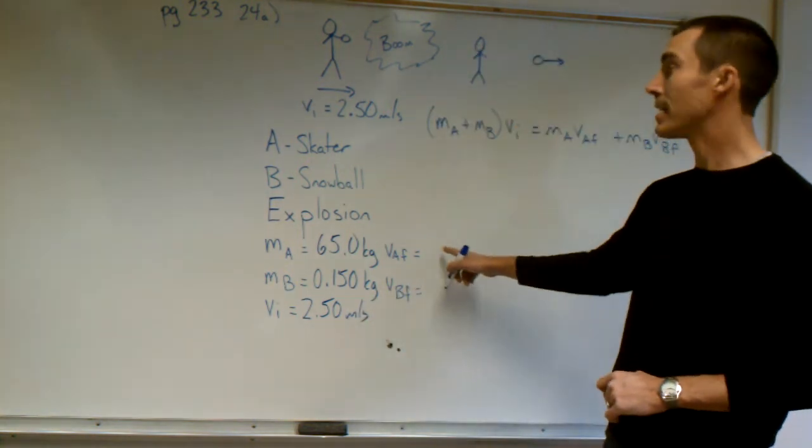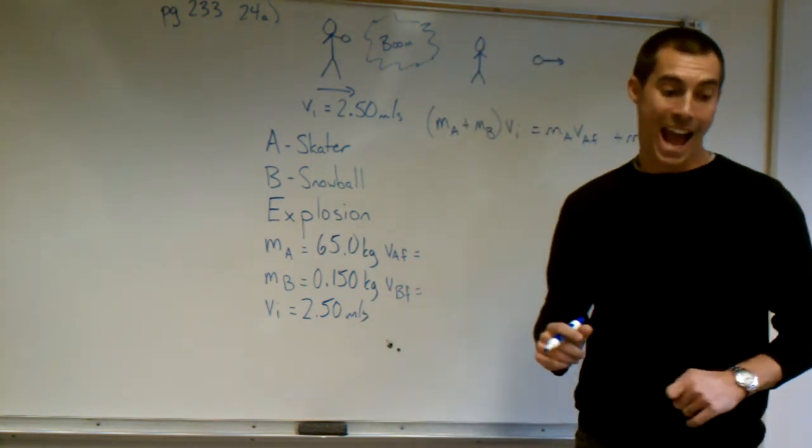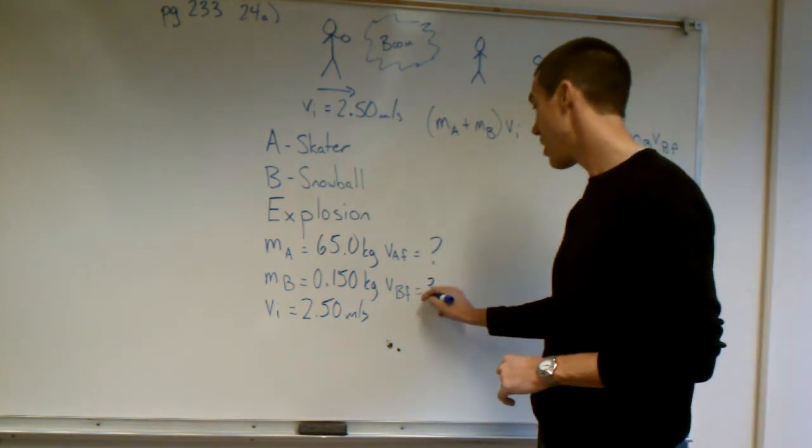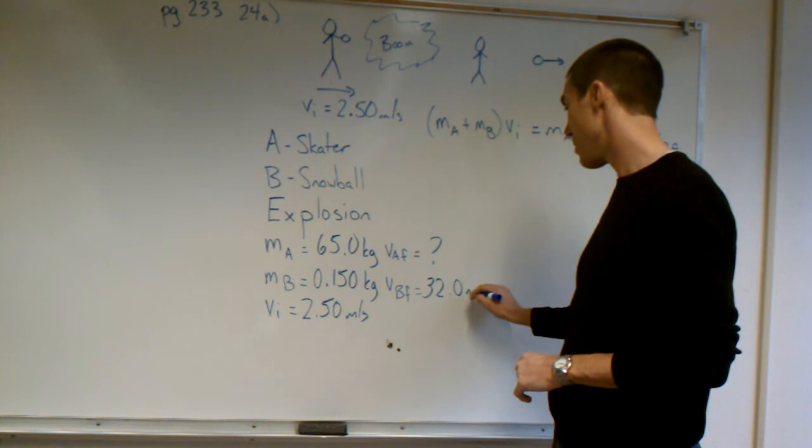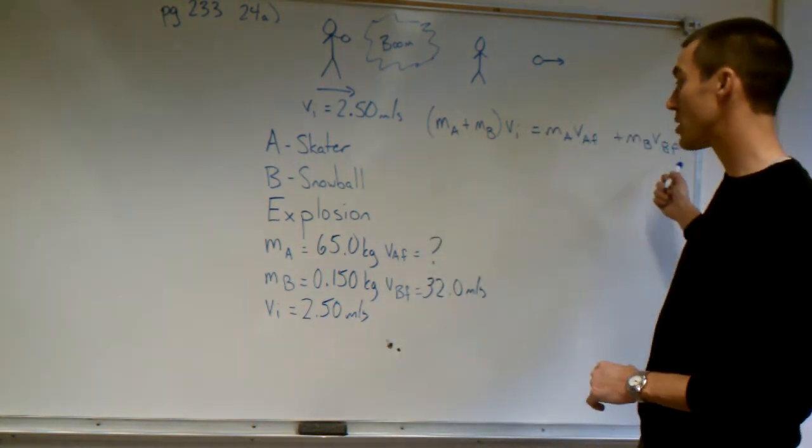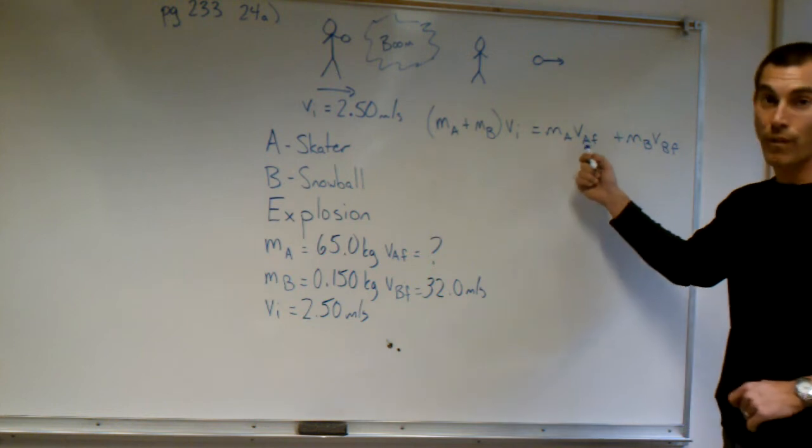The velocity of the skater after the collision is our question mark. The velocity of the snowball is 32.0 meters per second. Because there are no zeros, we cannot cancel any terms. We're looking for VAF.